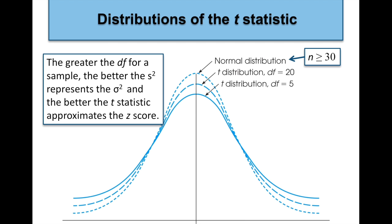Let's look at the distribution of the t statistic. Watch what happens to the shape of the distribution when you increase the sample size. Degrees of freedom is the sample size minus 1. If you only have 6 people in your study — degrees of freedom equals 5 — the t statistic distribution is flatter, like someone is pushing down at the top. As the sample size increases, it tightens up and those tails get thinner. When you go up to around 30 or more, it's going to approximate the normal distribution.